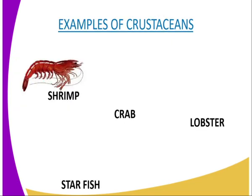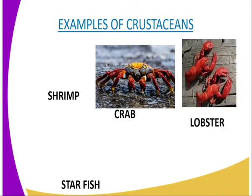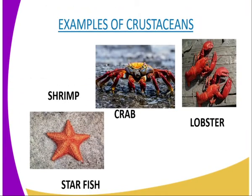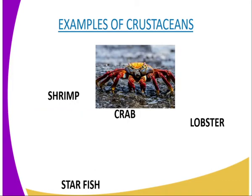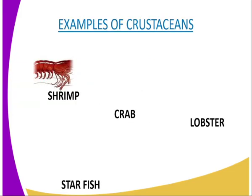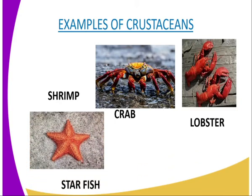Examples of members of the crustaceans include shrimp, crab, lobster, and starfish. The general characteristics of crustaceans: one, the head and the thorax are fused to form the cephalothorax, which is often protected by a carapace. Two, they have two pairs of antennae, as you can see from the lobster. They have between around five and twenty pairs of limbs which are modified for different functions, for example locomotion, feeding, and defense. The limbs are on the cephalothorax and the abdomen. Four, they have a pair of compound eyes. Five, they have three pairs of mouthparts consisting of one pair of mandibles and two pairs of maxillae.